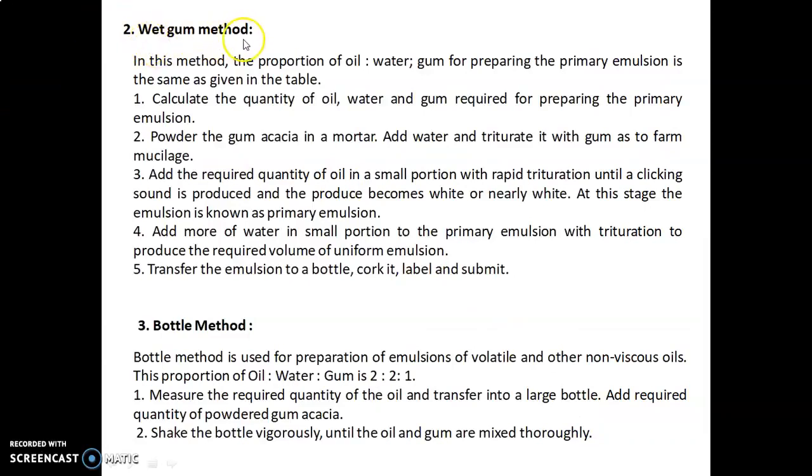Wet gum method: The proportion of oil to water to gum for preparing primary emulsion is the same as given in the table. Calculate the quantity of oil, water, and gum required. Powder the gum acacia in a mortar, add water, and triturate to form mucilage. Add the required quantity of oil in small portions with rapid trituration until a clicking sound is produced and the product becomes white or nearly white. This stage produces primary emulsion. Add more water in small portions with trituration to produce the required volume of uniform emulsion. Transfer the emulsion to a bottle, cork it, label and submit.